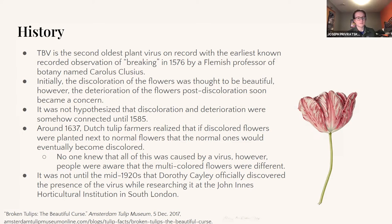A little bit of history about TBV: it's actually the second oldest plant virus on record, with the earliest known observations of breaking — the color effect that it causes — being in 1576 by a Flemish professor of botany named Carolus Clusius.